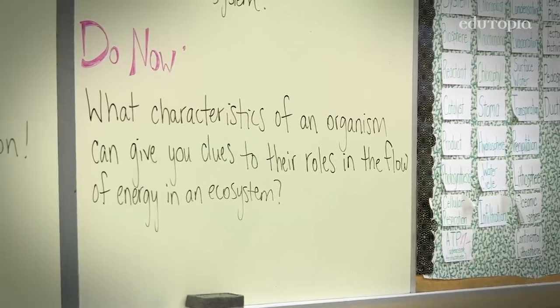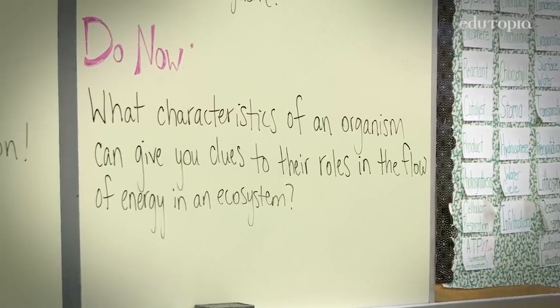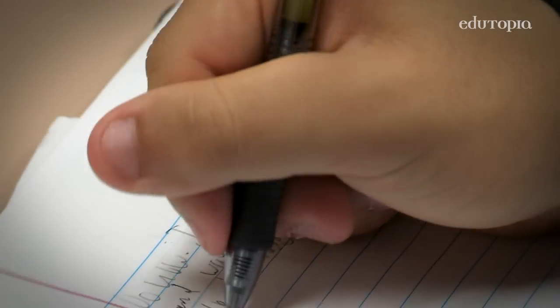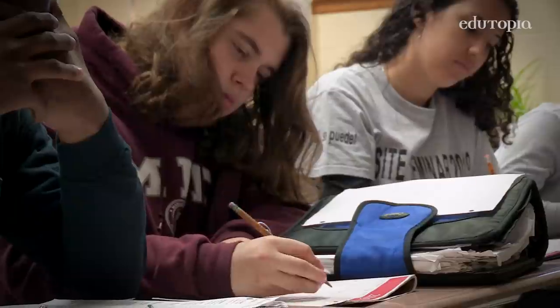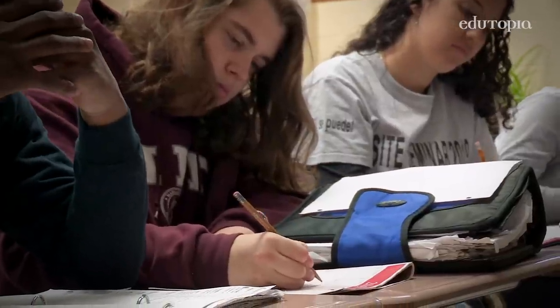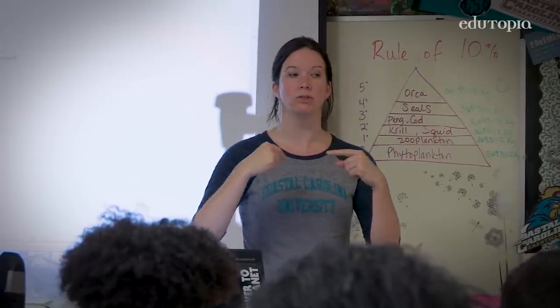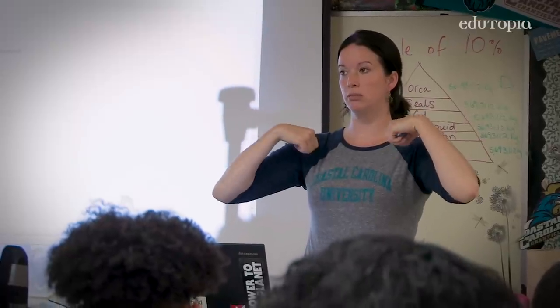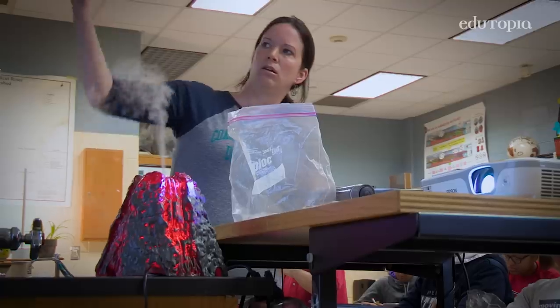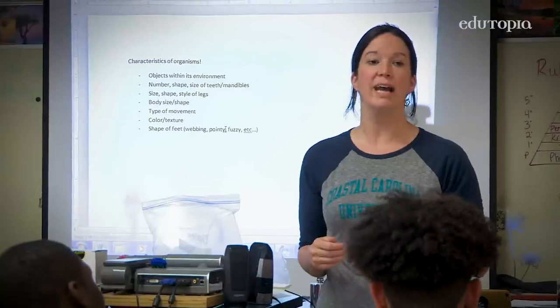To start the class, the 'do now' was to list the characteristics of an organism that you would need to know in order to determine its role in an ecosystem — thinking specifically about the physical qualities of the animals. What would you notice about it that would help you go, 'Oh, this thing might bite me'? If there are more teeth or sharper teeth, they most likely eat like animals. We shared out the list at the beginning of class and created an anchor chart on the board of these characteristics we'd be paying attention to.